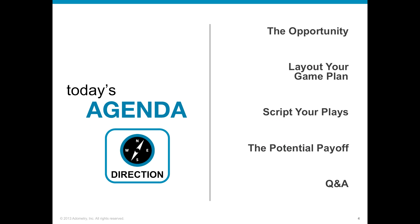The agenda for today's session covers the opportunity at hand and some reasons why you may want to consider doing something different than your current approach. We'll talk about laying out your game plan — what you hope to achieve and what that looks like. Then scripting specific players: a framework of six specific areas where you should think about, ask questions, and define what you hope to achieve. And finally, what the potential payoff is once you've completed this journey.